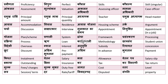'Byaaj' means interest. 'Anuvritti' means subsidy — for example, 'He got an educational subsidy' — 'Ushe shakshanik anuvritti pradhan ki gai hai'. 'Riayat' means concession. 'Chhut' means discount.